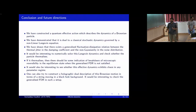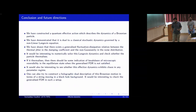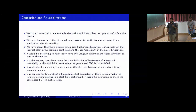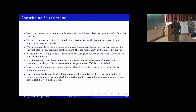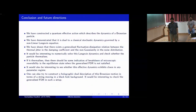It would be interesting to find what is the signal of such a breakdown of microscopic reversibility in the equilibrium state, and also to see whether this effective dynamics exhibits chaos in any parameter regime. Another direction is to construct a holographic dual description of this Brownian motion in terms of a string moving in some black hole background, and check the generalized fluctuation-dissipation relation in such a setup.